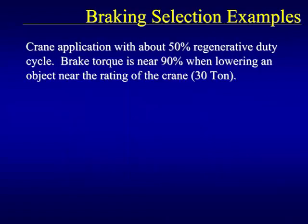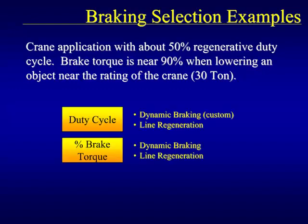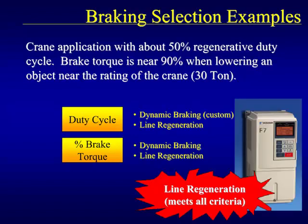Last, consider a crane application that has approximately a 50% regenerative duty cycle. The braking torque requirement is near 90% when lowering an object near the rating of the crane. Both dynamic braking and line regeneration meet the duty cycle and braking torque requirements for this application. However, because a custom dynamic braking solution is required for this large duty cycle, line regeneration would probably be more effective.